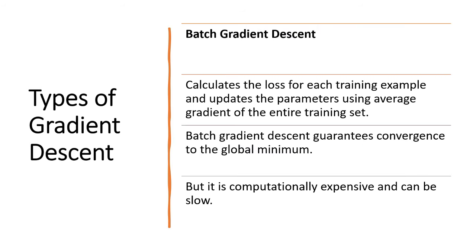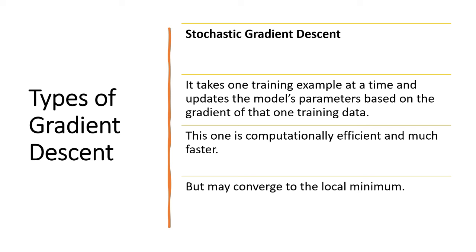So there are multiple types of gradient descent. One is batch gradient descent. It calculates the loss for each training example and updates the parameters using average gradient of the entire training set. Batch gradient descent guarantees convergence to the global minimum. But it is computationally expensive and can be very slow. Then stochastic gradient descent. It takes one training example at a time and updates the model's parameters based on the gradient of that one training example. So this one is computationally efficient and much faster but may converge to the local minimum.